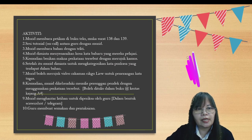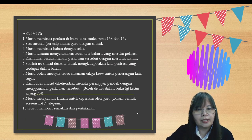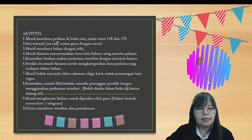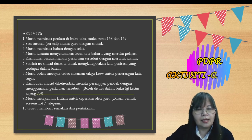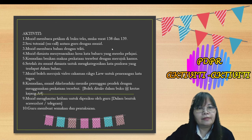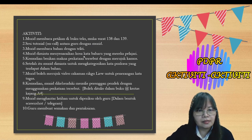Seterusnya, kita lihat secara holistik atau layout aktiviti-aktiviti yang kita nak laksanakan dalam PDPR. Pertama, murid kena membaca petikan di buku teks, rujuk muka surat 138 dan 139, dua muka surat sahaja. Kemudian ada sesi tutorial on call antara guru dan murid. Murid diminta membaca bahan dengan teliti, menyenaraikan kosa kata, lepas itu memberikan makna perkataan. Itulah tugas pertama.